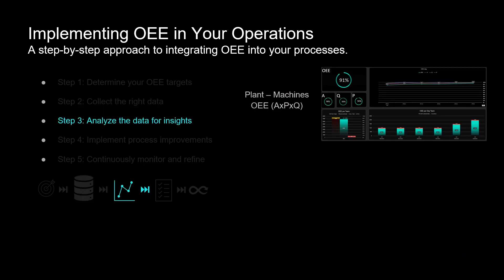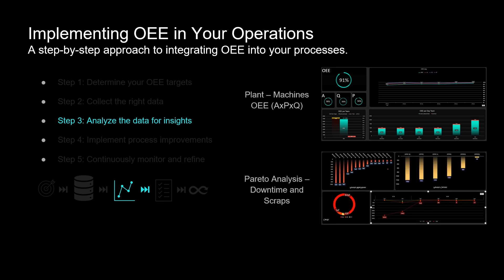Step 3: create advanced analysis reports tailored to user roles — including operators and managers — to calculate your OEE for your plant and each machine. Pareto reports are essential for analyzing the main causes of downtime and scrap. These reports will enable you to monitor your production performance over time. Additionally, you can set up notifications for losses to proactively address issues and optimize efficiency.